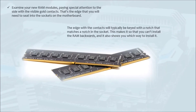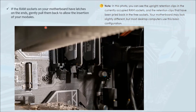If there are additional free slots, you don't need to remove the older ones — you can simply plug in the new RAM to upgrade. Examine your RAM module, paying special attention to the gold edge contacts and the notch cuts — one main notch and two side cuts — which seat into the corresponding notch on the motherboard slot. If the RAM socket on your motherboard has latches on the end, gently pull them back to allow insertion of the module. You can see upright retention clips in occupied sockets and released clips in free sockets.